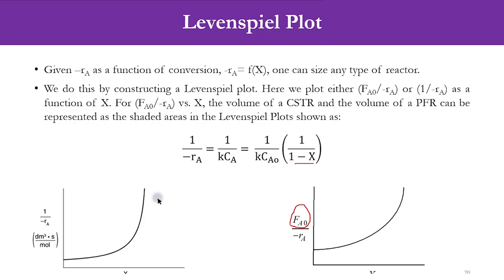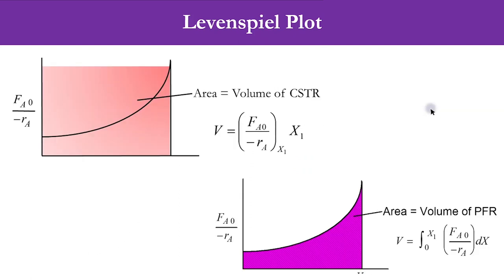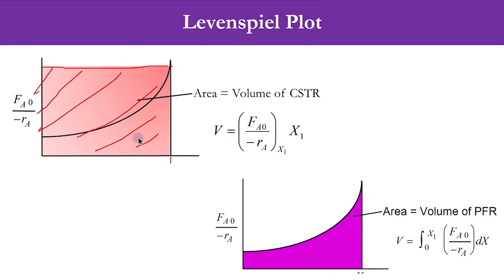Once we go to the example we will solve it as well. When graphically calculating reactor volumes, we plot either FA0 over minus rA or 1 over minus rA as a function of X. To find CSTR volume, take a point — for example at X equals 0.9 — draw a horizontal line connecting to the curve, then draw a vertical line to the X-axis. The complete rectangular area represents the volume of the CSTR. For the PFR, it is the area under the curve — that is the main difference between CSTR and PFR volume.